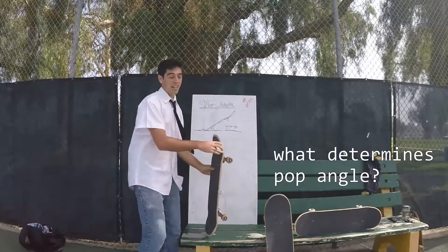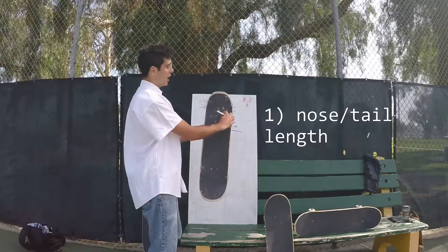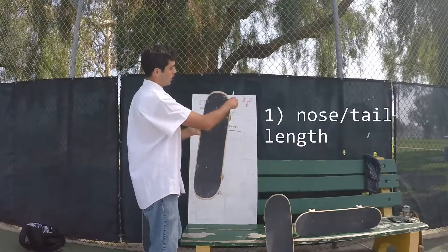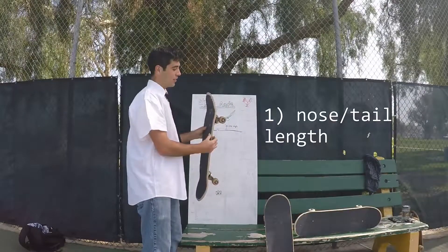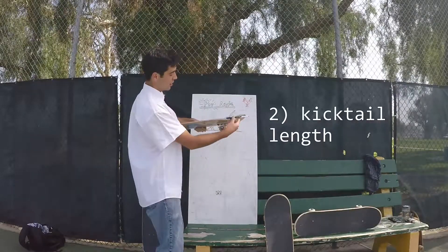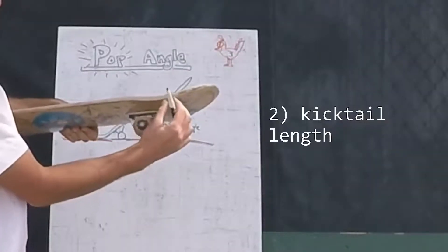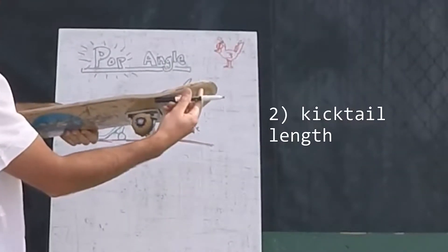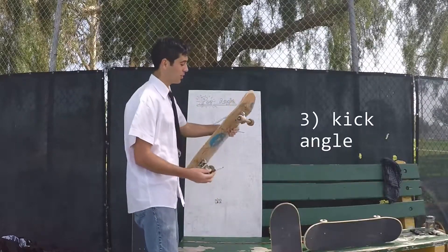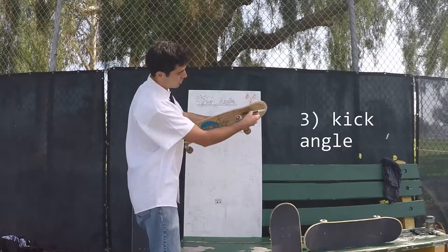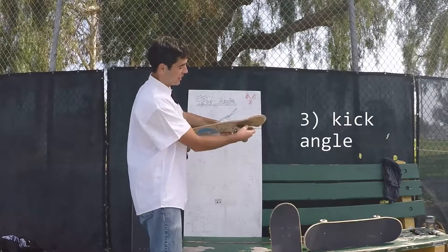The first one is the nose and tail length, which is the distance from the outer bolts to the tip of our board, just straight up like that. The second feature is the kick tail length, which is from the beginning of our kick tail — so where it starts to angle up — out to the tip of our board. The third one is kick angle, which is measured from the bottom surface of our board and the slope of the kick tail.